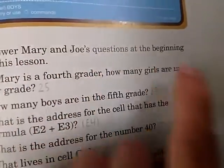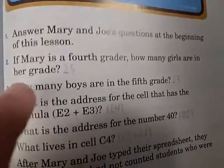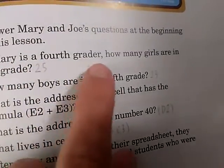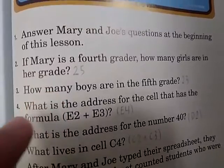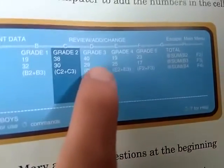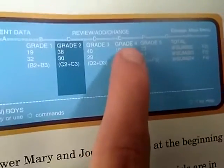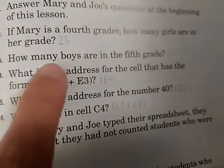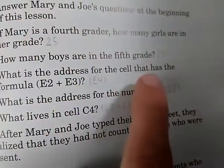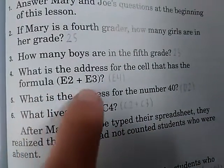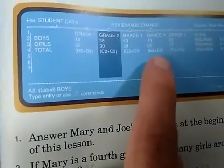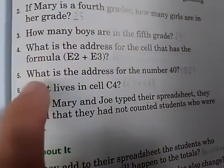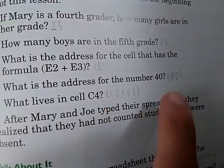Answer Mary and Joe's questions at the beginning of this lesson. If Mary is a 4th grader, how many girls are in her grade? In 4th grade, girls is 25. How many boys are in the 5th grade? In 5th grade, boys is 23. What is the address for the cell that has the formula E2 plus E3? The answer is E4. What is the address for the number 40? D2.